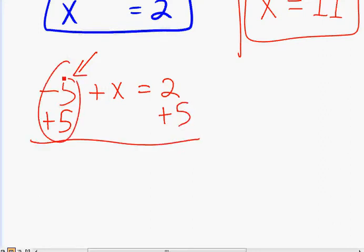And what happens on the left side? Negative 5 and positive 5, that will cancel. You're left with x equals 2 plus 5, and you get 7.